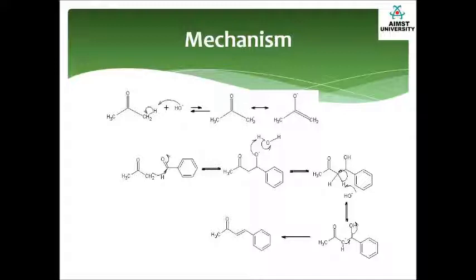Being a strong nucleophile, the enolate attacks the carbonyl of benzaldehyde and forms a beta-carbonyl alkoxide ion. This alkoxide ion abstracts a proton from water to form a beta-hydroxy ketone. Sodium hydroxide then extracts another acidic alpha hydrogen to form a stabilized carbanion. The electron pair on the carbon is used to eliminate the hydroxide ion, forming an alpha-beta unsaturated ketone in an irreversible step. This is an example of the E1CB reaction.